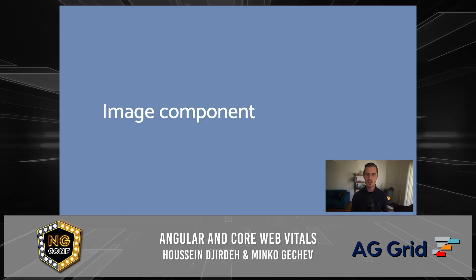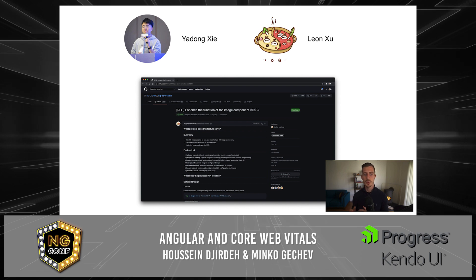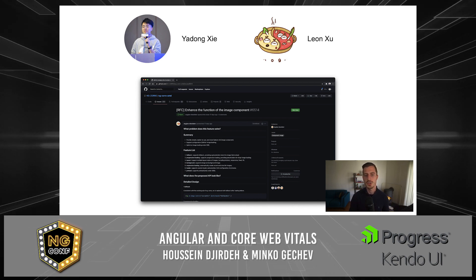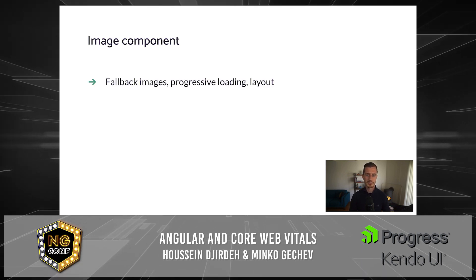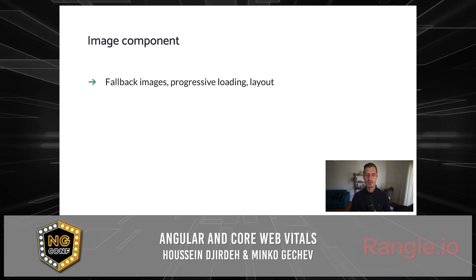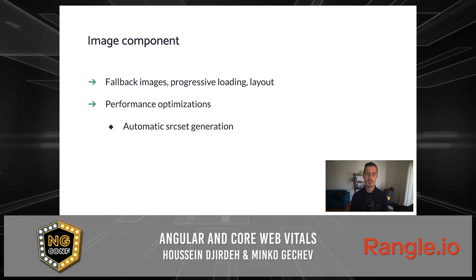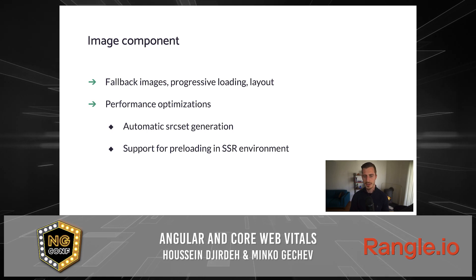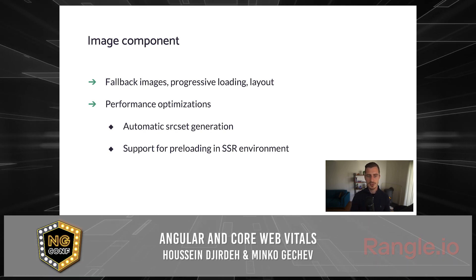The last optimization I want to talk about is a joint effort with the ngZone team. Together with Yadong and Leon, we've been collaborating on an image component which follows best practices to improve Largest Contentful Paint and Cumulative Layout Shift. The image component has a lot of useful features, including functionality for providing a fallback image, it allows you to progressively load an image, specify a layout, and so on. From a performance perspective, it can also help you automatically generate the srcset for a predefined set of CDN providers, allowing you to implement adapters for custom providers. It also supports preloading of images in server-side rendered environments, and has strict dimensions support in order to reduce Cumulative Layout Shift.